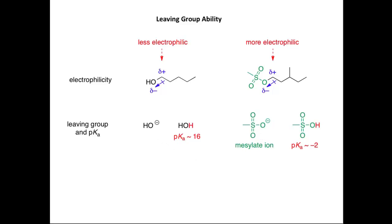We can explain the stability of the mesylate ion by considering resonance. The negative charge is delocalized across all three oxygen atoms, and we can draw resonance structures showing the electron density being pushed onto each oxygen. As a rule of thumb, the more resonance structures we can draw, the more stable the species. So the mesylate ion is indeed a much more stable anion than hydroxide and a much better leaving group.